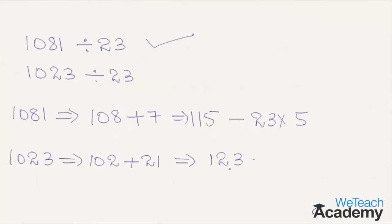Now repeating the concept here, we get 12 plus 21, which is equal to 33. 33 is not divisible by 23. So the given number is not divisible by 23.